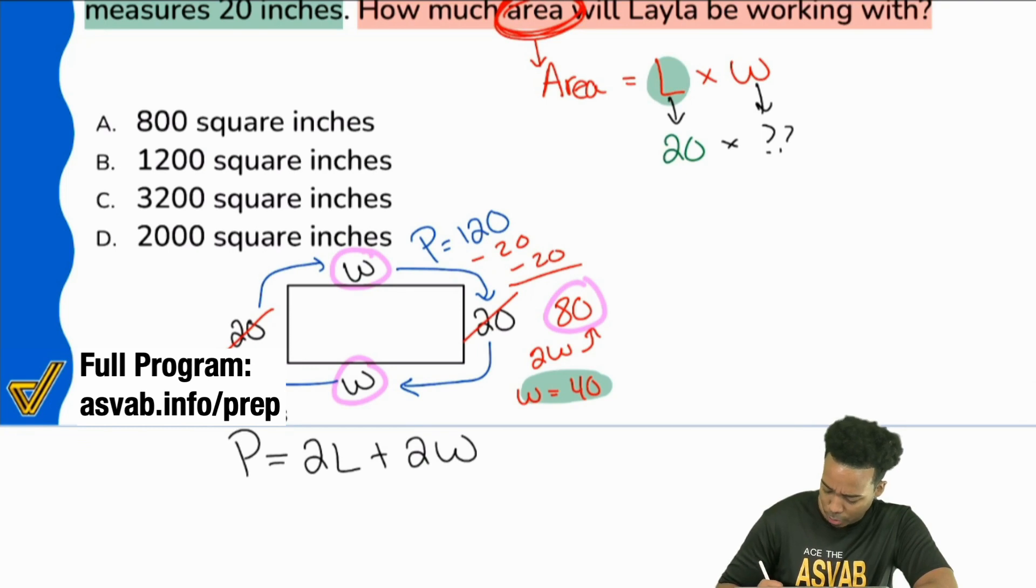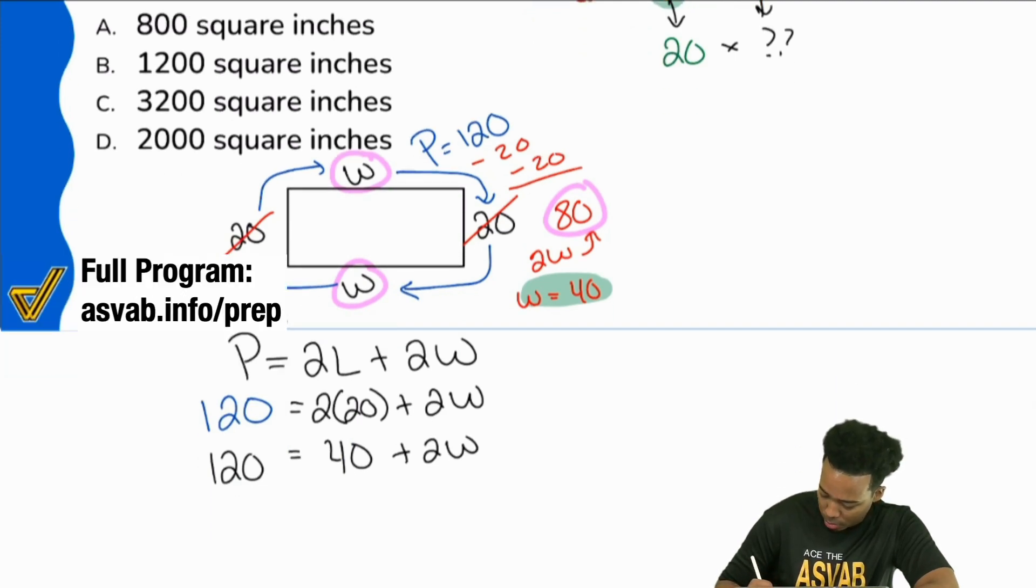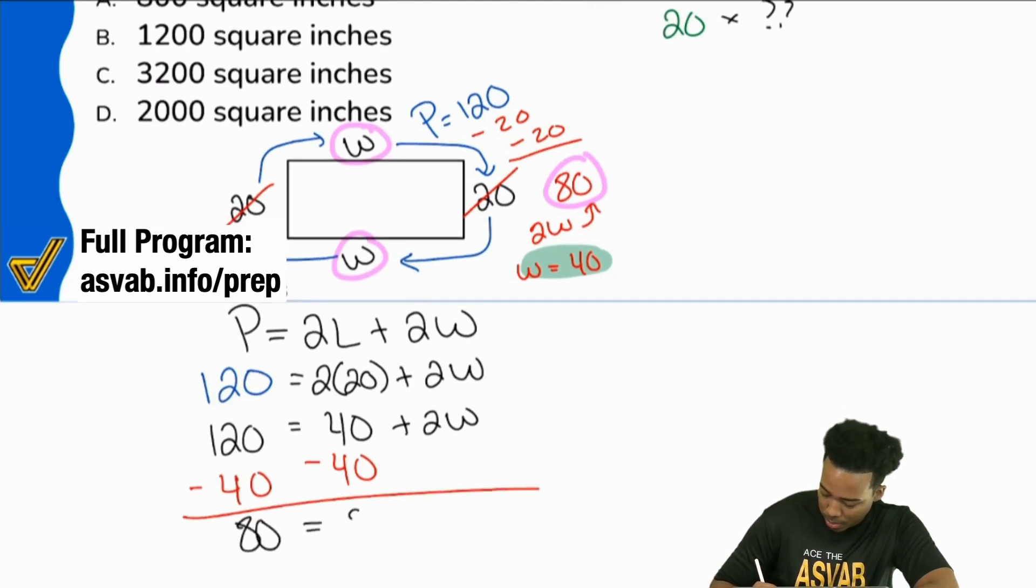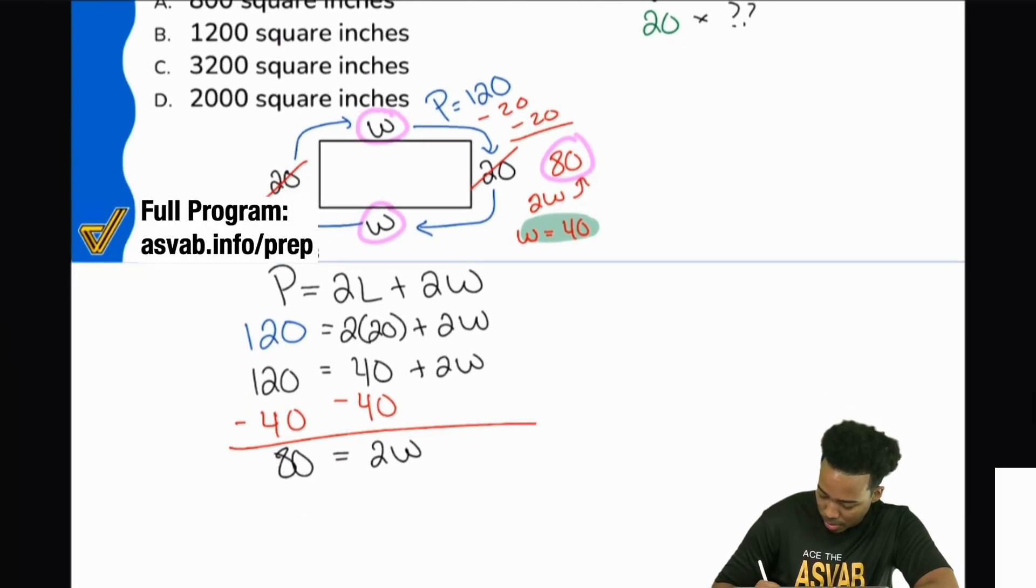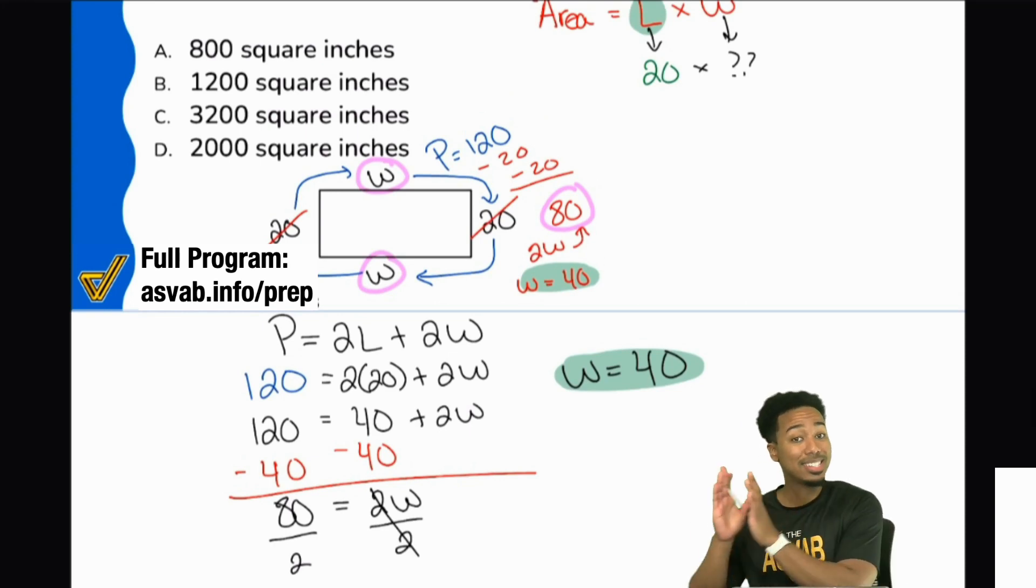I'm going to put in the perimeter as 120 right over here. And I know that my length was 20. So we have two times 20 plus two W. Well, two times 20 is going to be 40. Take away the 40. Let me actually show you on both sides here, minus 40 on both sides. We have ourselves 80 equals two W. And the last thing that we'll do is divide both sides by that two. And that's going to give you W equals 40. So you can see it both ways there. But hopefully that makes a little more sense in terms of how we had to take a detour, using that perimeter to find the width. And now that we've found the width, now we can solve the problem.